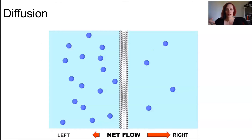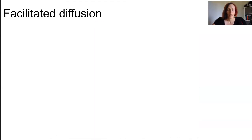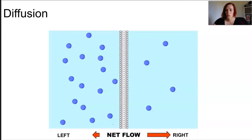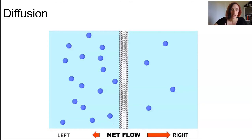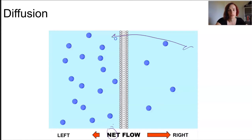Things that might impact how quickly diffusion actually happens include temperature, the steepness of the gradient — if there are way more particles on one side of the gradient it's going to be different — and the molecule size, since they are passing through that membrane. We're talking about net flow, so it's not that none of the particles on the right will come across the cell membrane; it's about more of them moving in one direction.